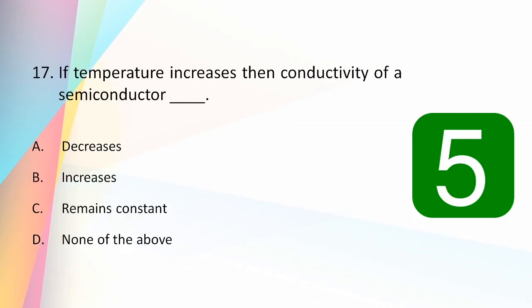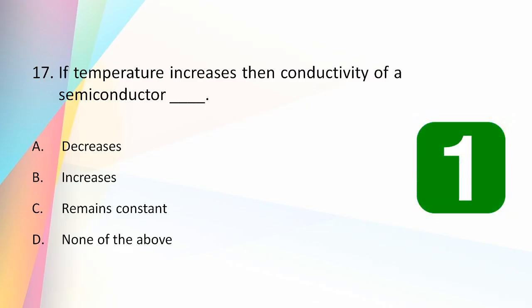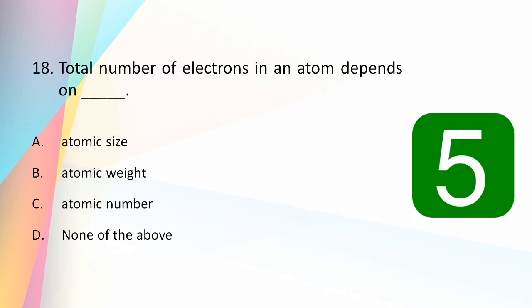If temperature increases, the conductivity of a semiconductor increases. As shown in the diagram, a semiconductor's resistivity decreases with temperature, so conductivity increases with temperature.